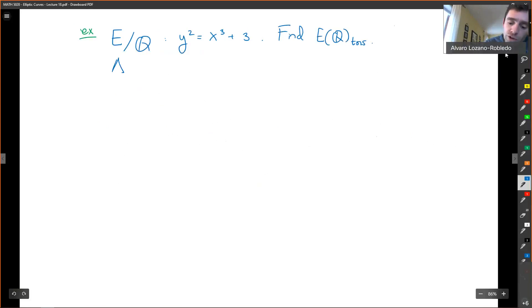So here is what you need to know. First of all, if we're going to use local methods, I need a minimal Weierstrass model. So what is the discriminant of this? It is minus 3888, which is minus 2 to the 4 times 3 to the 5. So we know that it's actually two things.